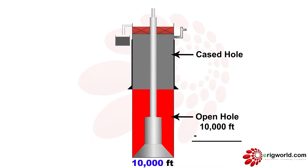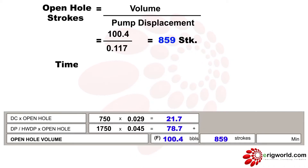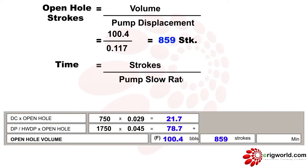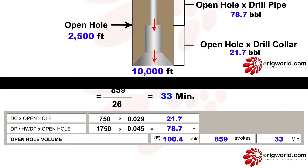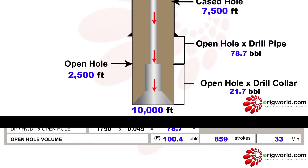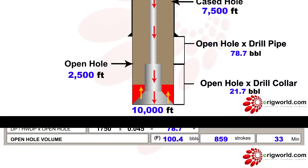Minus the casing depth, which is 7500 feet, gives me an open hole length of 2500 feet. To calculate time, using the same formula — 859 divided by 26 — I get 33 minutes. This is how we calculate open hole volume, open hole strokes, and open hole time for displacement.